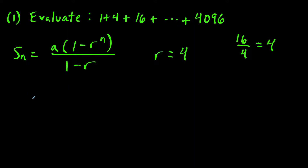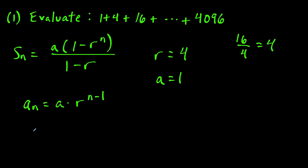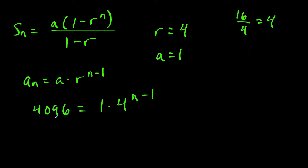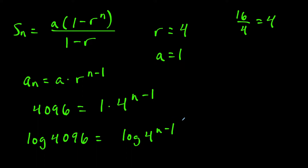We could think about a geometric sequence as equal to the first term a times r to the n minus 1. The first term a equals 1, and our nth term equals 4096. So we set 4096 equal to 1 times 4 to the n minus 1. To find what power of 4 gives 4096, we can use logs — taking the log of both sides gives log 4096 equals log of 4 to the n minus 1. In this example, n works out to equal 7.